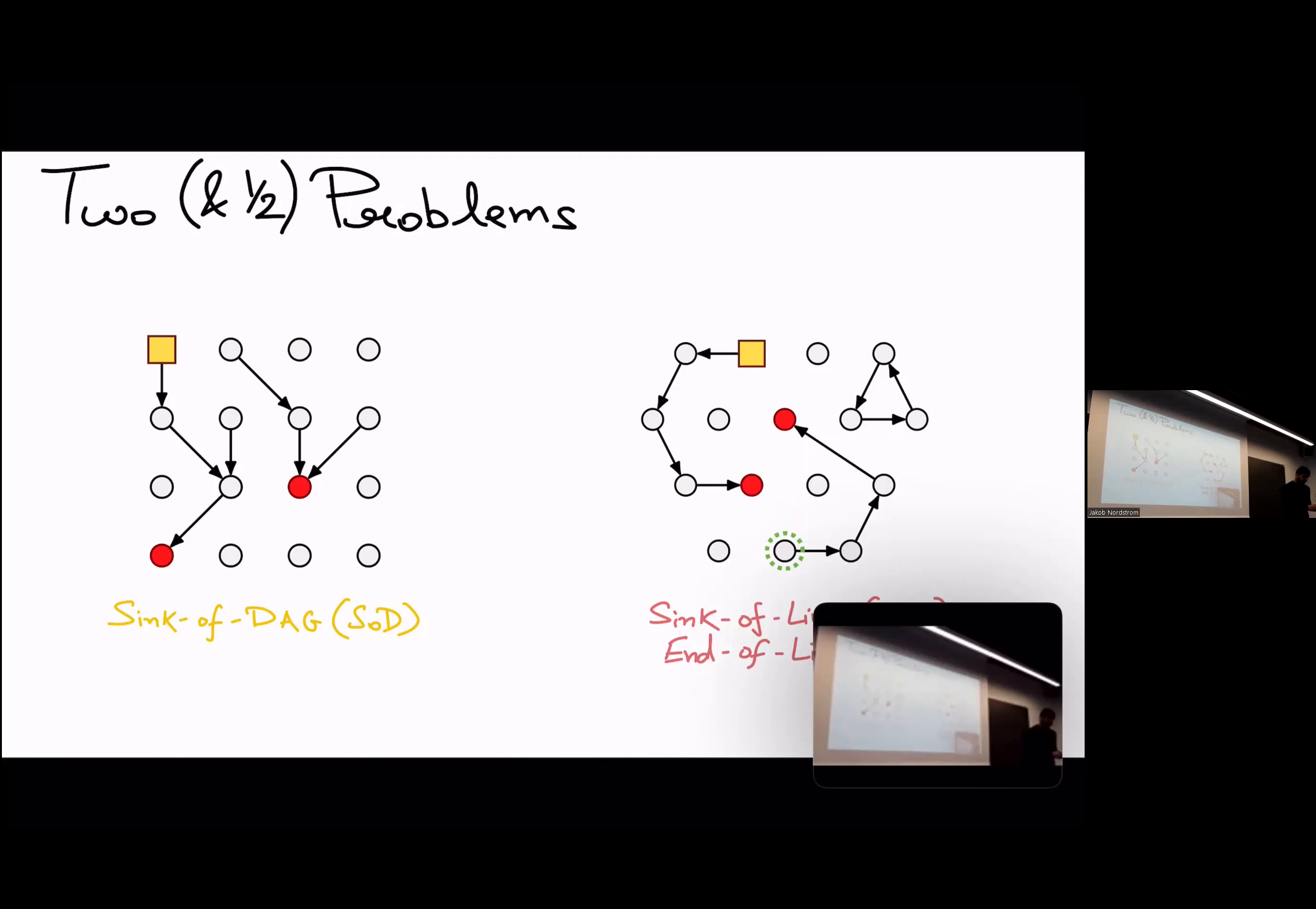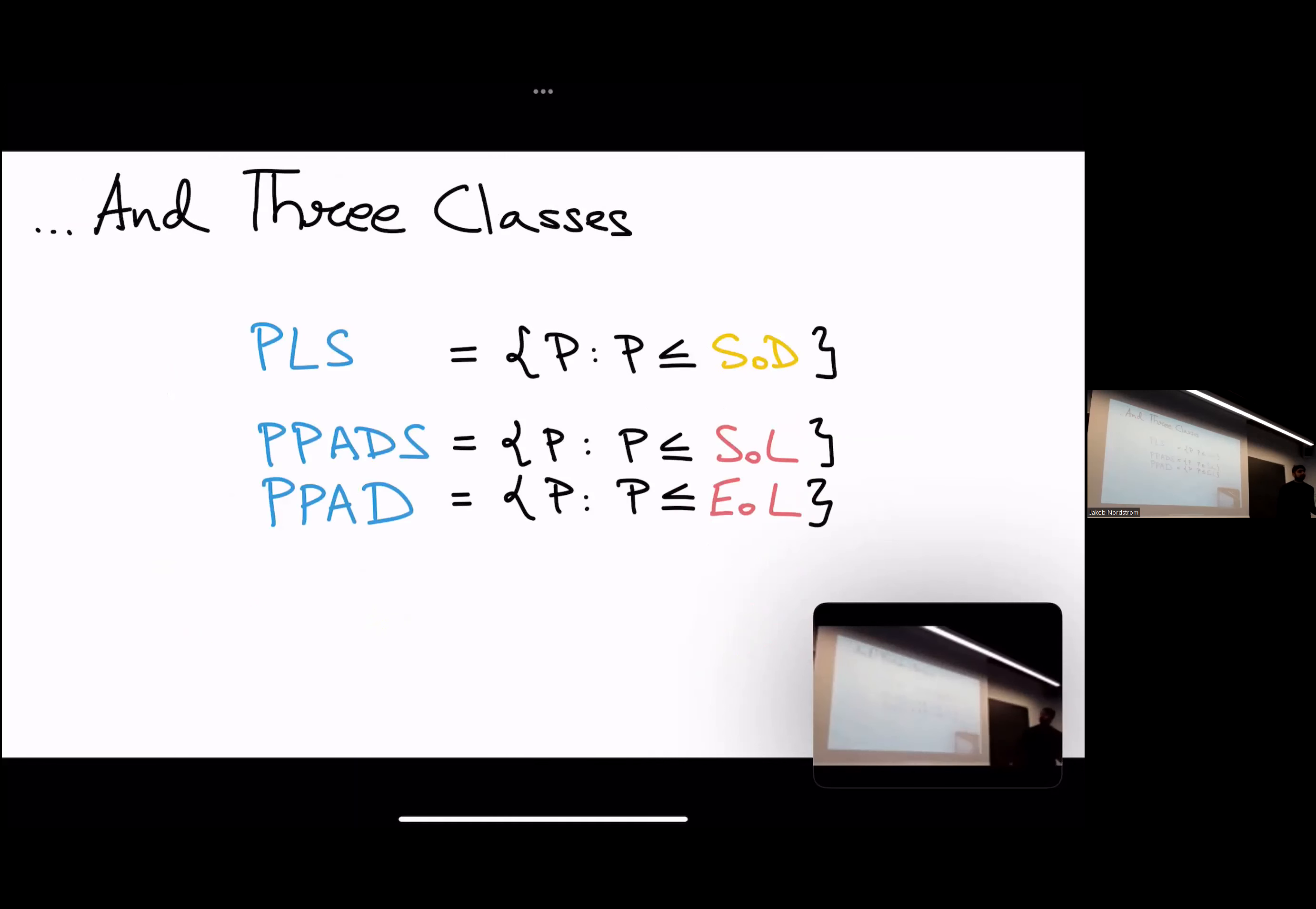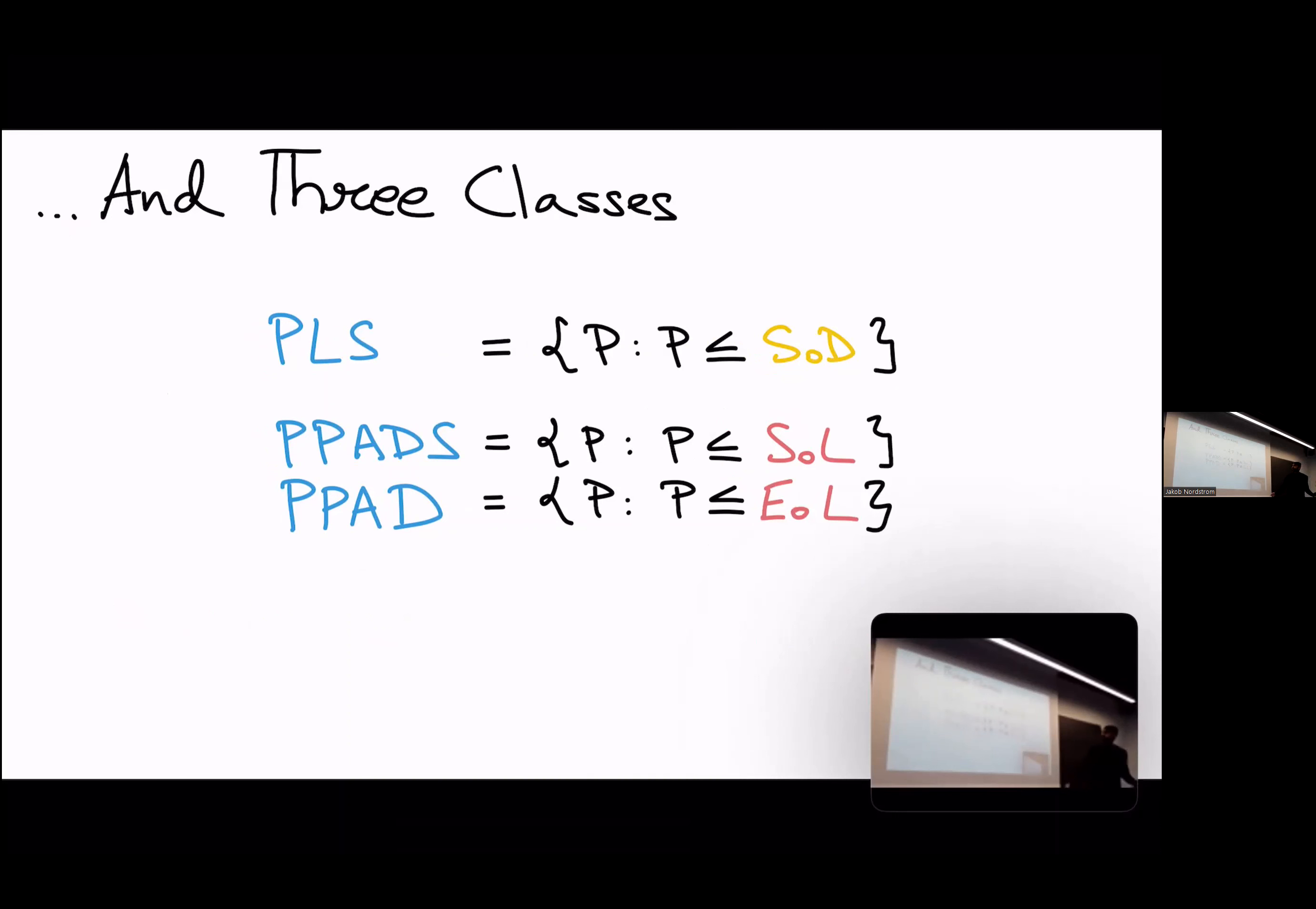What this gives you is that every vertex has an in-degree at most one. So in particular, you can't have merging of paths like you did in DAG. And again, the objective is to find a sink. And now I have to confess, I lied to you a little bit. You need to remember one more problem.